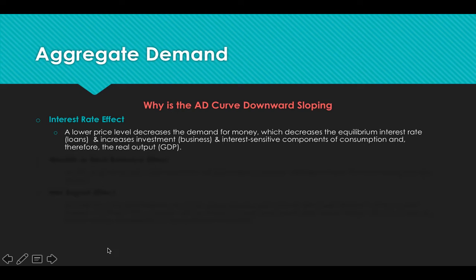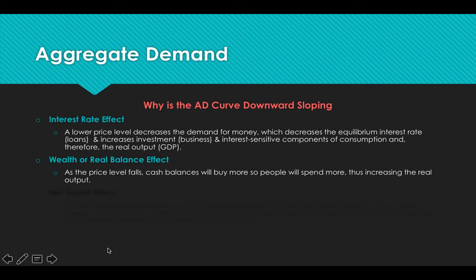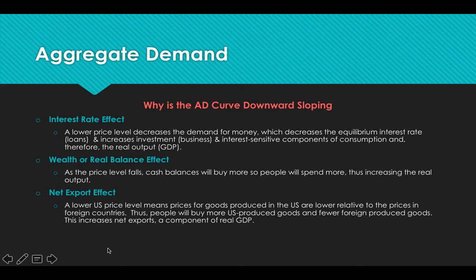The second reason for the downward sloping aggregate demand curve is the wealth effect, or the real balance effect. As the price level falls, the cash that people have will buy more, and so people will spend more money, and that increases real output. And then finally, the net export effect. A lower price level means goods produced in the U.S. are cheaper relative to goods in foreign countries, so people in the U.S. and people from other countries are going to buy more, which will increase GDP.